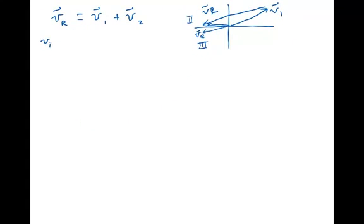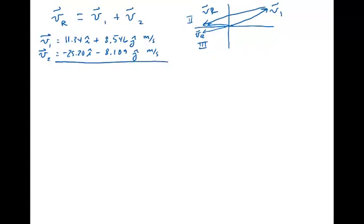First let's just write down our results again for v1 and v2. So I have 11.34i plus 8.546j meters per second. V2 is a negative 25.20i minus 8.189j meters per second. Notice I write v2 directly under v1 so that I can add them together easily.